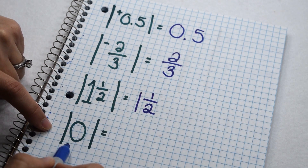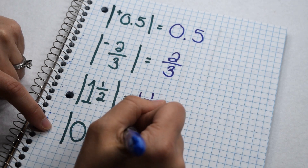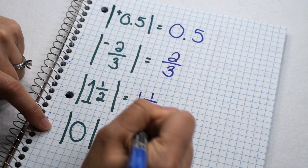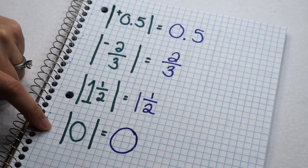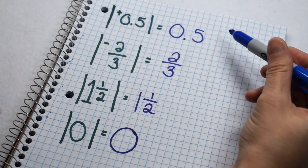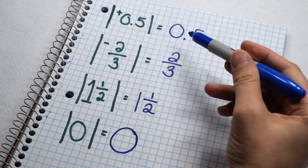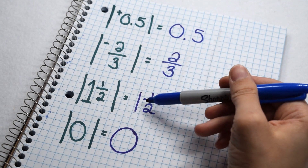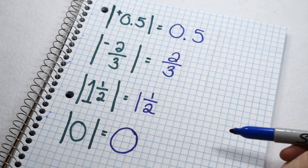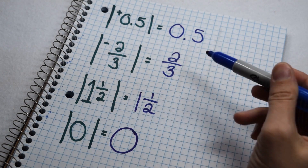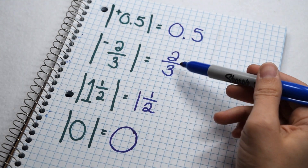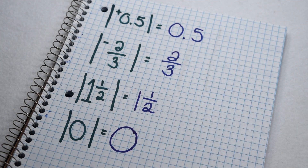Even zero has an absolute value because we're describing its distance from zero. The absolute value of zero would still be zero because it's zero units away from zero. No matter what number we're finding the absolute value of, there's no sign in front of it. Absolute values are not positive or negative — they simply describe the distance from zero, not which direction you're going from zero.